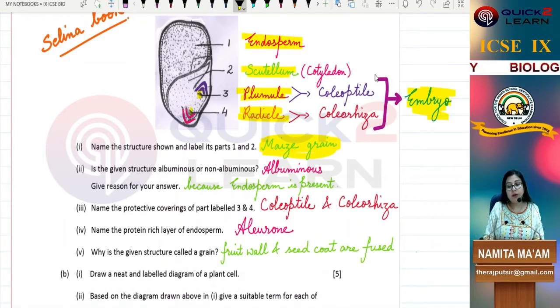Maize grain and its parts we have labeled: endosperm and scutellum. Second is: Is the given structure albuminous or non-albuminous? Give reason for your answer. It is albuminous because it has endosperm present. Seeds with endosperm present we call albuminous. All cereals are albuminous. Seeds without endosperm we call non-albuminous.